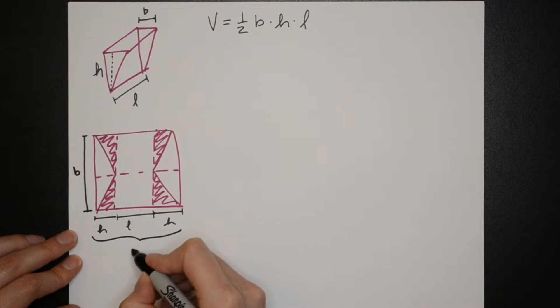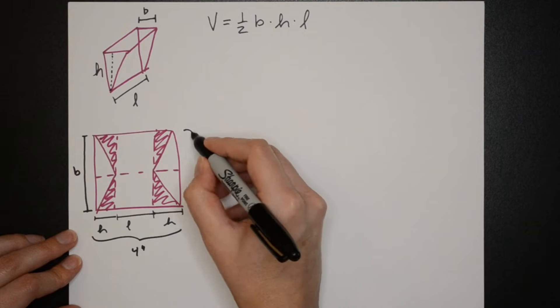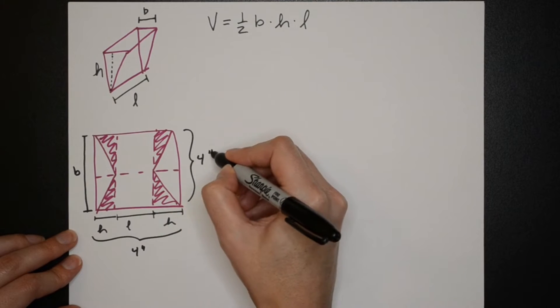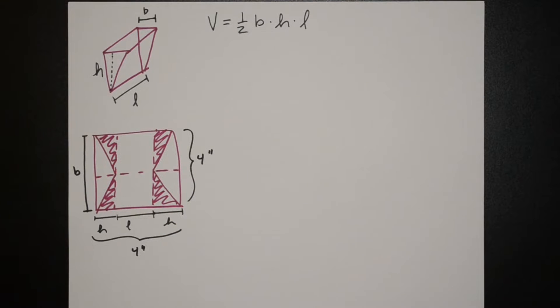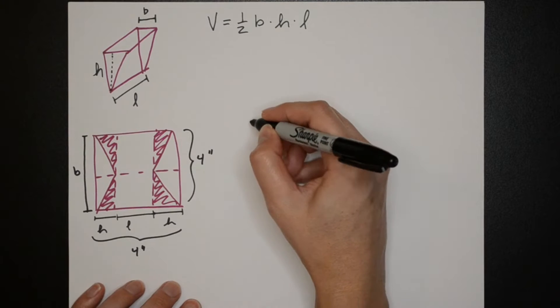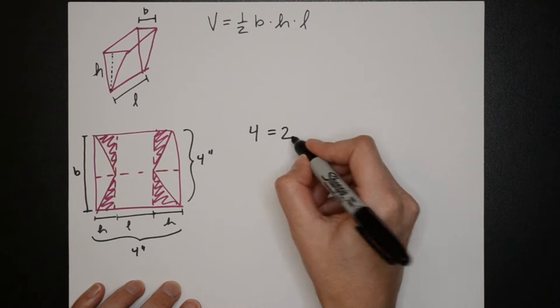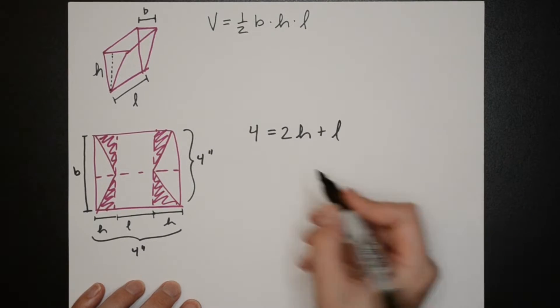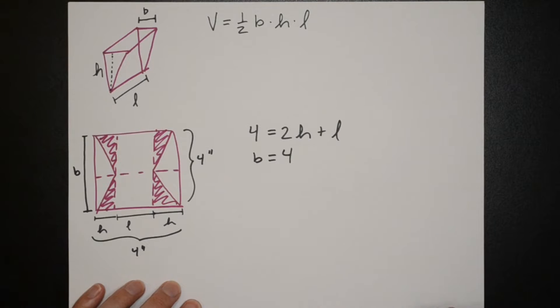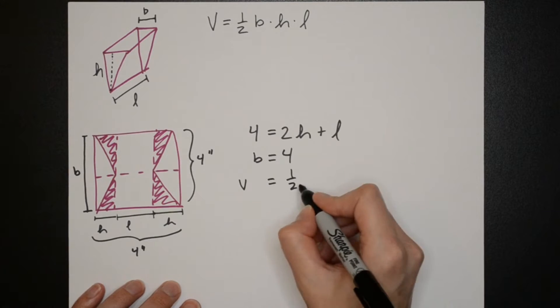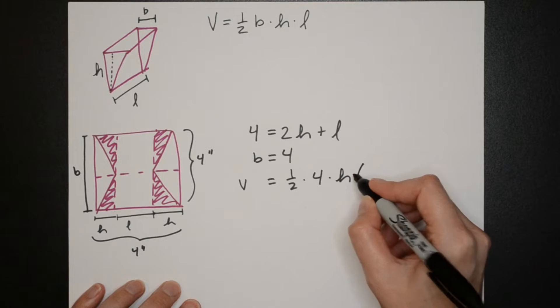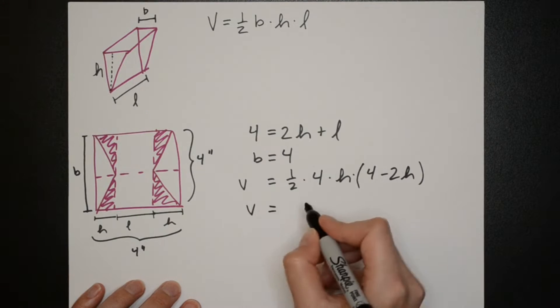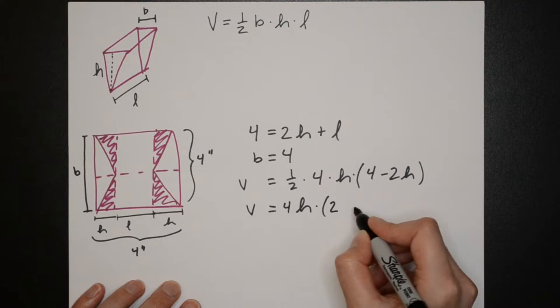I'm using a 4 inch by 4 inch piece of aluminum foil so with this we can write down two equations. The first is that 4 equals 2H plus L and the second is B equals 4. Then we can substitute this back into the volume equation and get volume with a single variable which here I've chosen to be H.